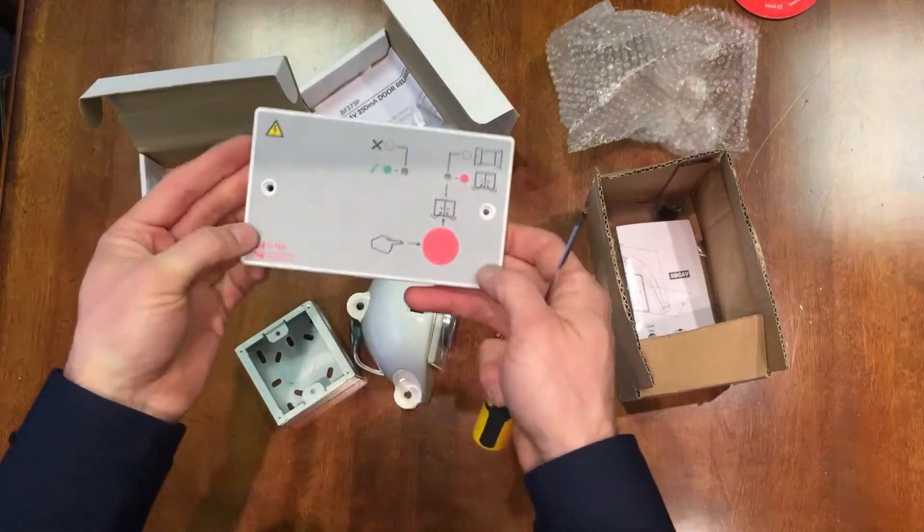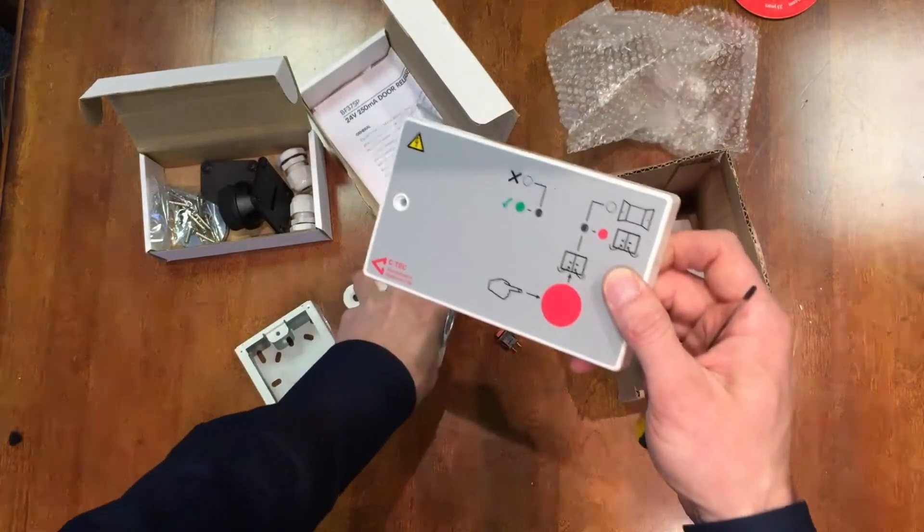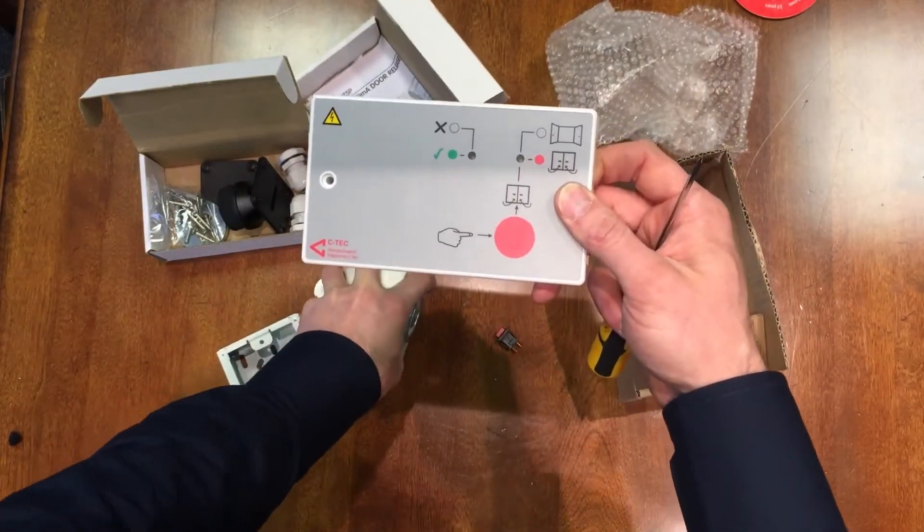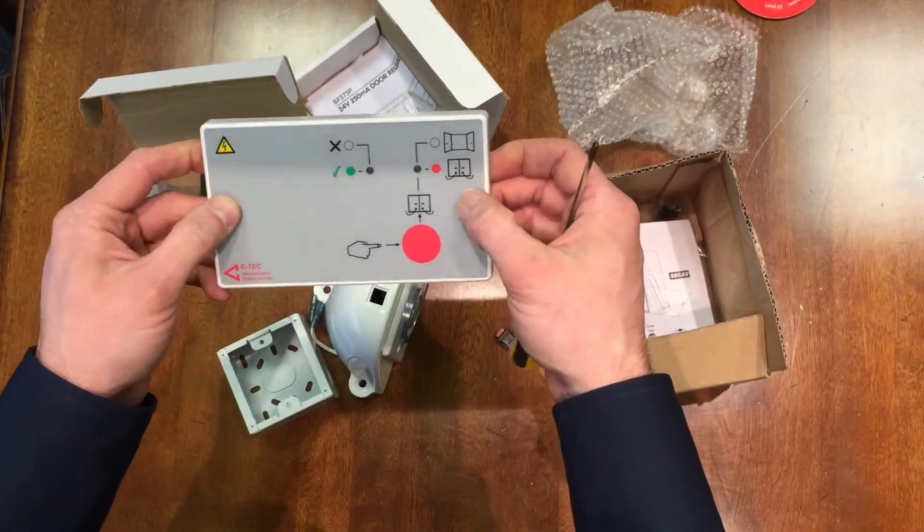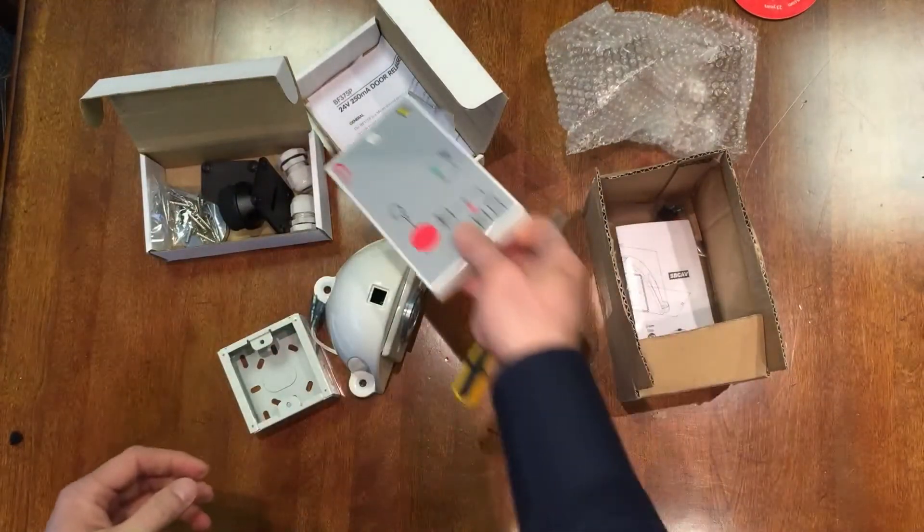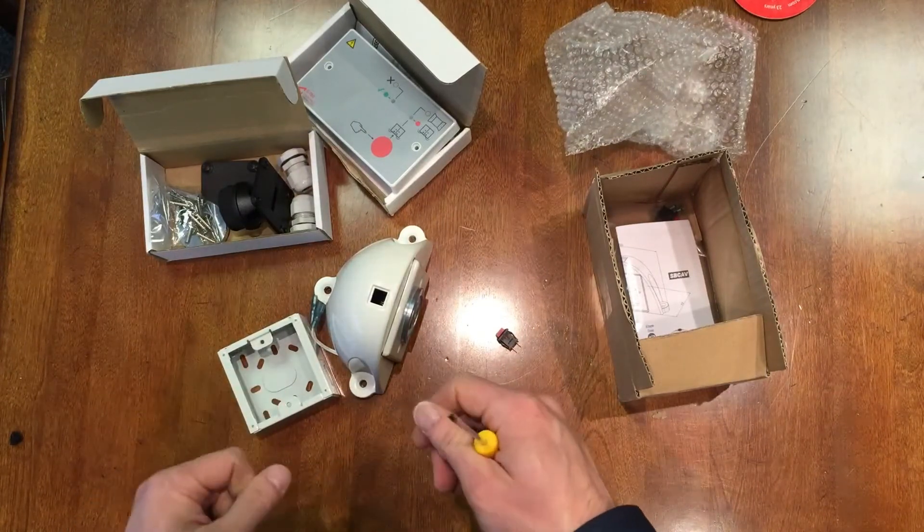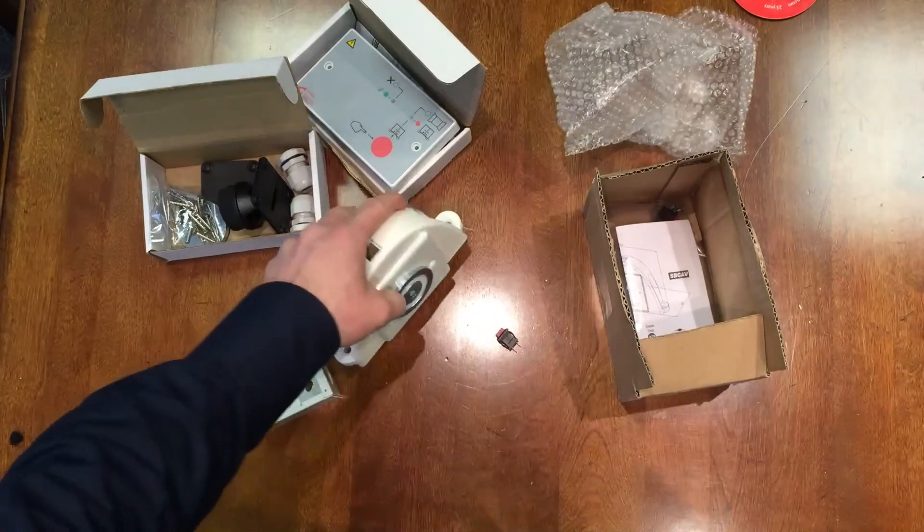It's a nice neat unit. This is a 250 milliamp power supply, so that will do five of these units in terms of current draw. If you need something bigger, we have two amp power supplies which will do 20 door holders. If you have any questions, give us a call in the office or email info@commsic.ie. We'd be happy to help. That's an overview of our door holders, thanks very much.